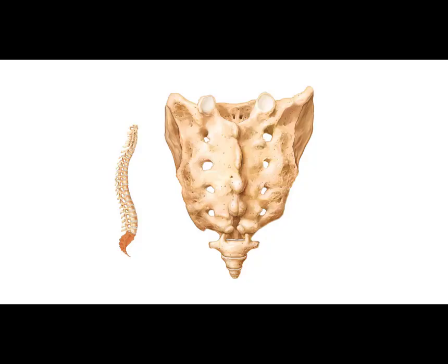Looking at the sacrum in more detail, you can see that there are essentially five fused vertebrae to create one solid bone. Below the sacrum we have the coccyx, which again is typically four fused vertebrae as well.